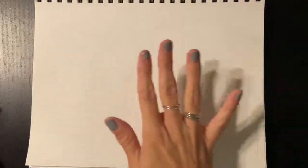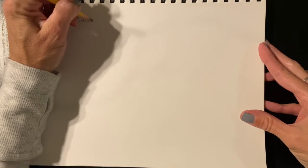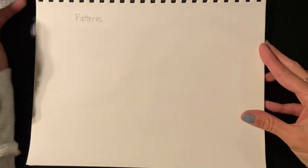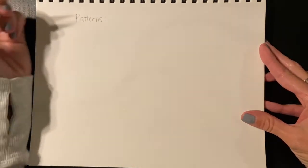All right boys and girls, I have my sketchbook or piece of paper held sideways. I'm going to talk to you first about patterns. Patterns are when shapes, lines, or objects are repeated. For example, I'm going to start with some shapes.